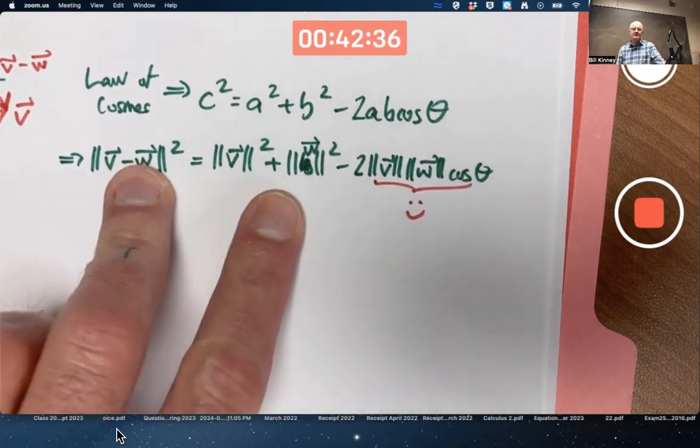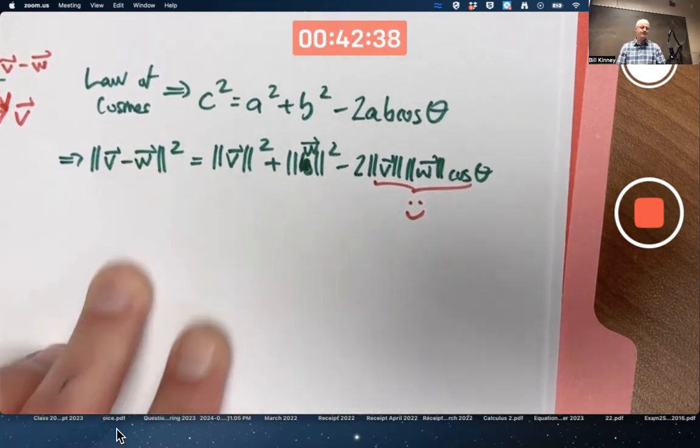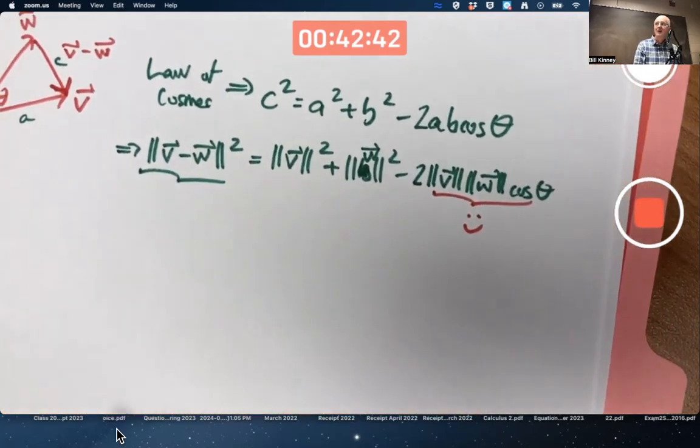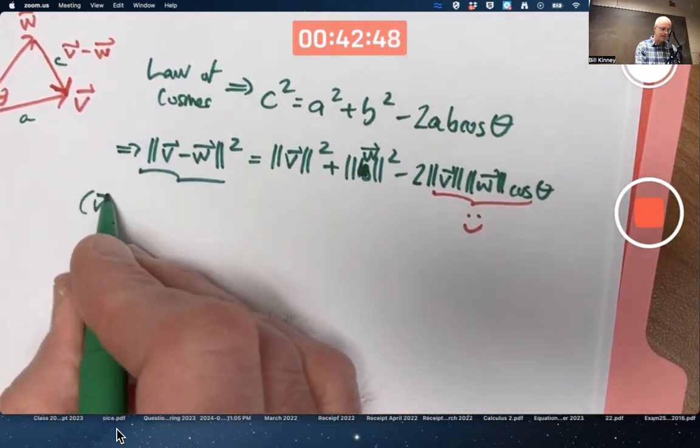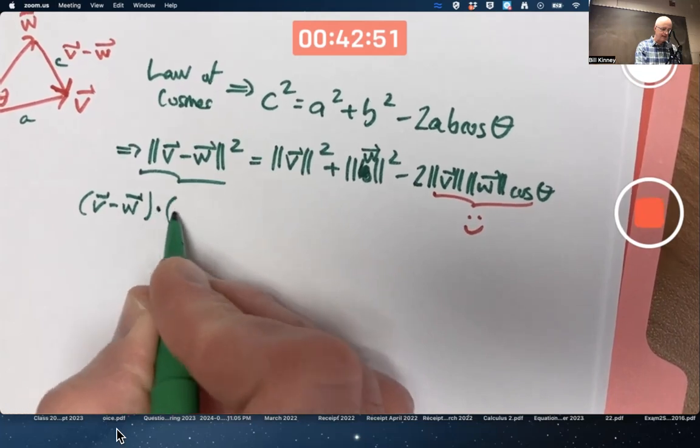But how do we deal with all this other stuff? Go back to the thing I said three minutes ago that's pretty fundamental. That is the same as V minus W dotted with itself.